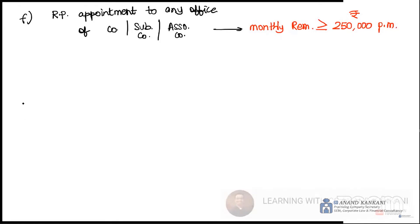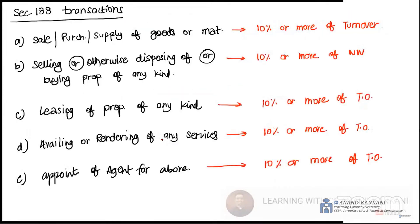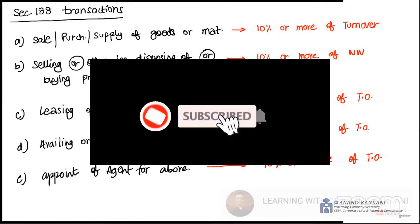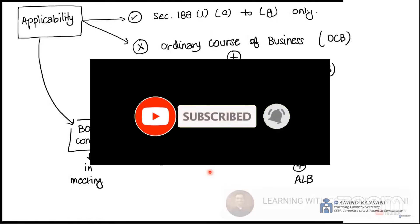The last point: for underwriting engagement, what has been given here is 1% of the net worth. These are your limits — these are the most important points you have in Section 188, Sub-section 1, Clause A to Clause G.